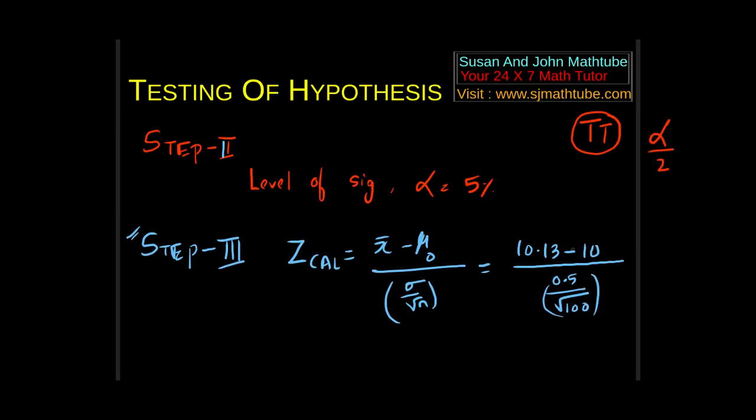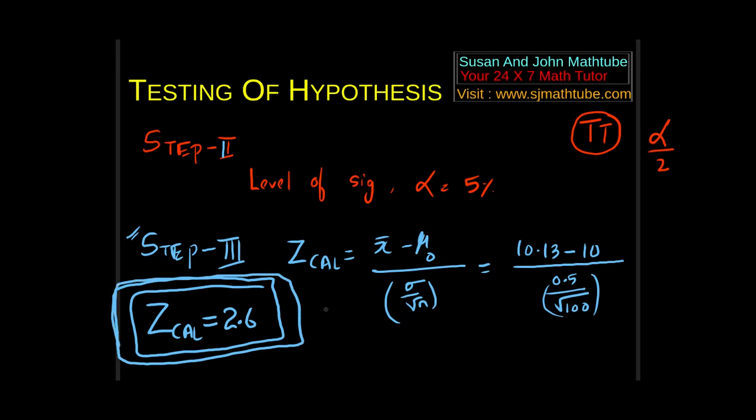Look at this: the sample mean, the proposed value, and standard deviation and sample size. So you can use the calculator and write it. So z calculated equal to I got 2.6. Now put this in a box. You will be searching for this value in step number 5. So put it in a box.